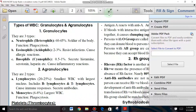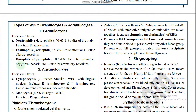Types of WBC: Basophils make up 0.5 to 1% — the least percentage among WBCs. They secrete histamine, serotonin, and heparin, and cause inflammatory reactions. The maximum percentage belongs to neutrophils. It is important to remember both the percentages and functions of each WBC type.